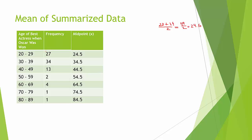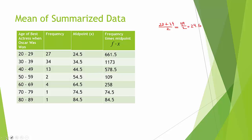The frequency tells us how many pieces of data were in that category — this category had 27 pieces of data. So to calculate the mean, I'm going to use 24.5 27 times. Since adding 24.5 27 times is repeated addition, I can use multiplication: 27 multiplied by 24.5 gives the same result. So we take frequency f times midpoint x to get the f·x value for each category.